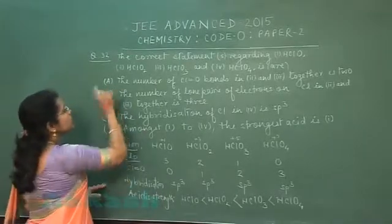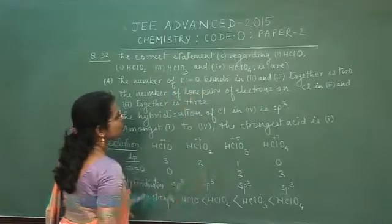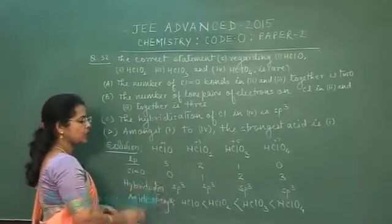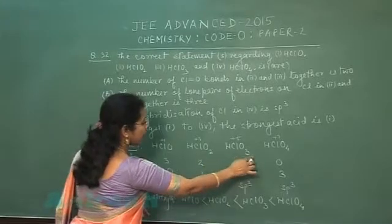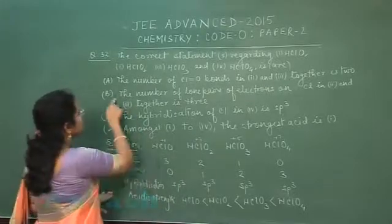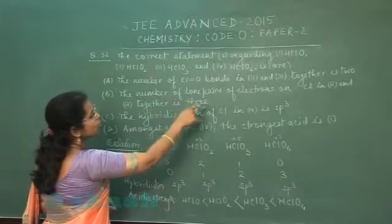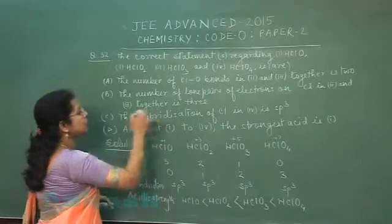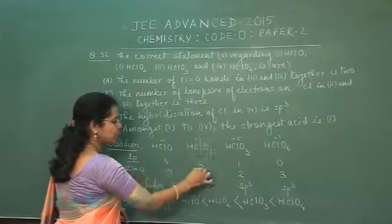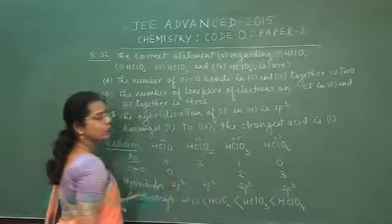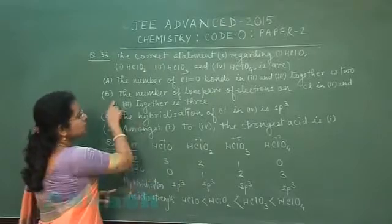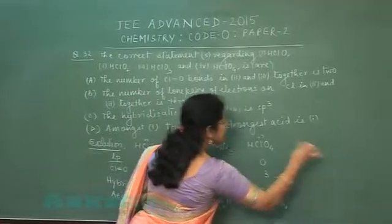Now checking the statements. Statement 1: the number of Cl-O double bonds in HClO₂ and HClO₃ together is 2. But 1 + 2 = 3, so statement 1 is incorrect. Statement 2: the number of lone pairs on chlorine in HClO₂ and HClO₃ together is 3. HClO₂ has 2 lone pairs and HClO₃ has 1 lone pair — together that is 3. So statement B is correct.